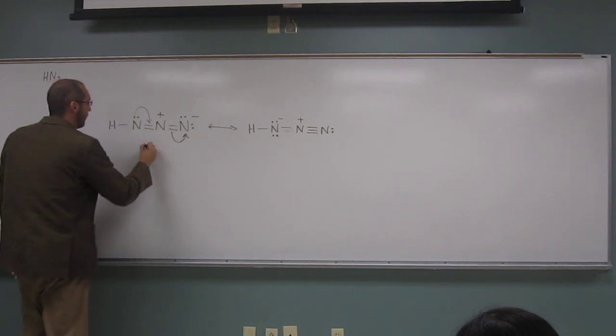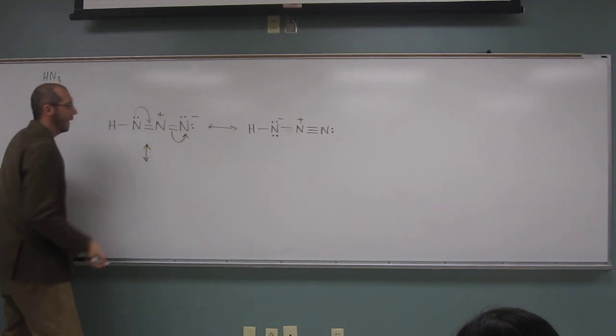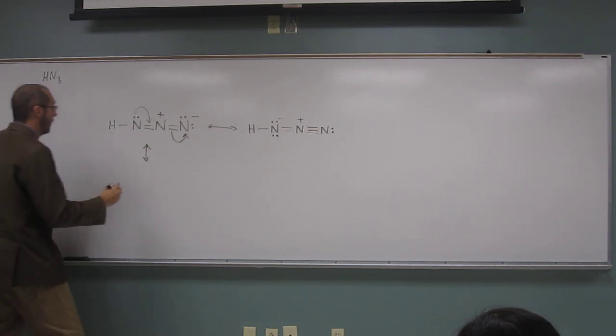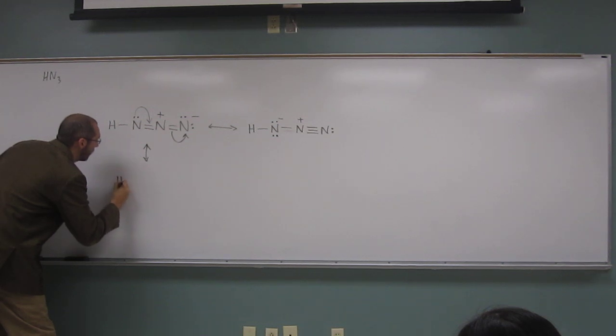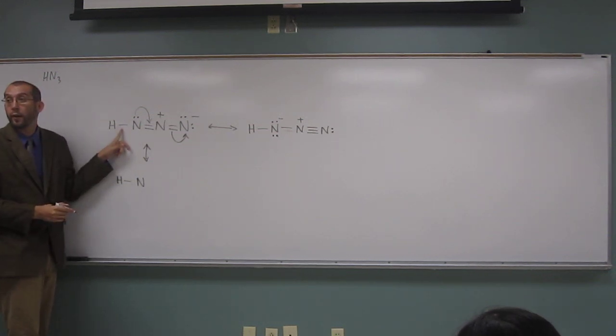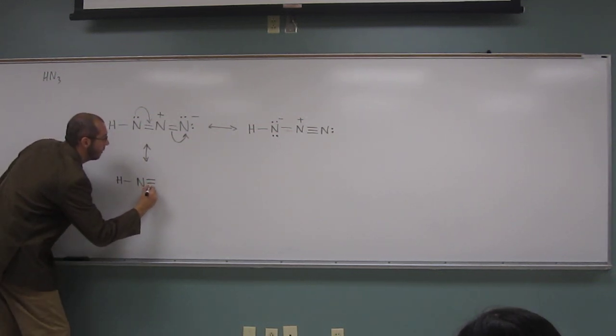So when I do that, I get a not a very good resonance structure because we'll have a big charge differential here. So look what happens. So H, this end has what? Three, three bonds here and one bond there, right? So what is its charge going to be?